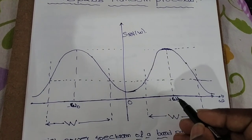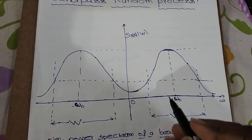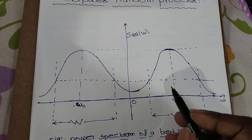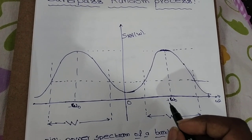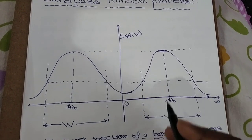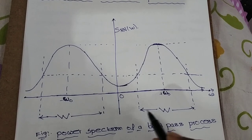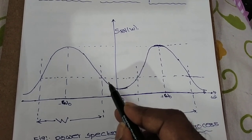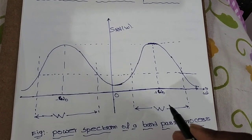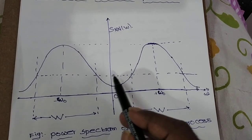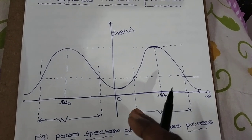Omega naught is the band central frequency where power density spectrum is maximum. Minus omega naught and omega naught are band central frequencies where power density spectrum is maximum. The power density spectrum has its significant components present within the bandwidth W, and does not include omega equal to zero.